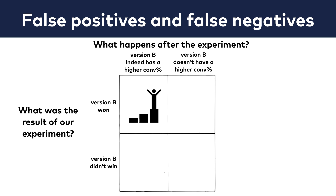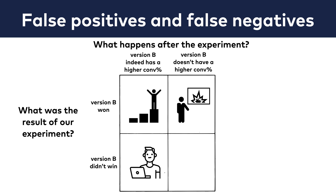Everyone's happy — you are the colleague of the month. If version B has won, but in real life it turns out it doesn't bring better results, or even brings worse results, that's a false positive. For an online business, that's a disaster — and for your career too, as you'll have to explain that a mistake happened and the promised conversion rate increase didn't materialize. Version B didn't win on the test but would have won in real life — that's a false negative. You lose money by not using the better converting version. And when B didn't win and wasn't better, that's the status quo — nothing happens.